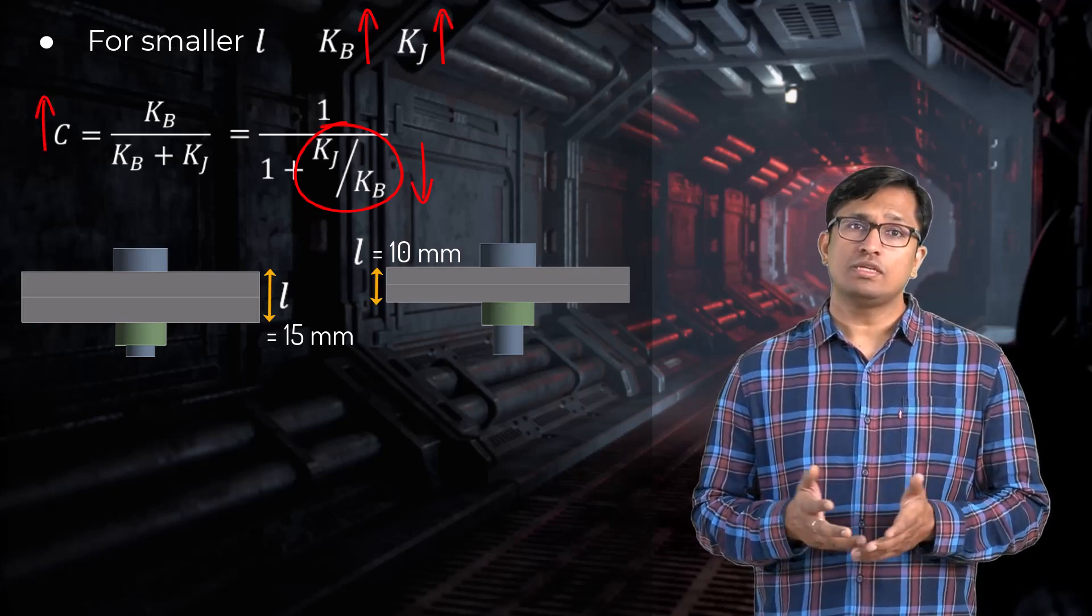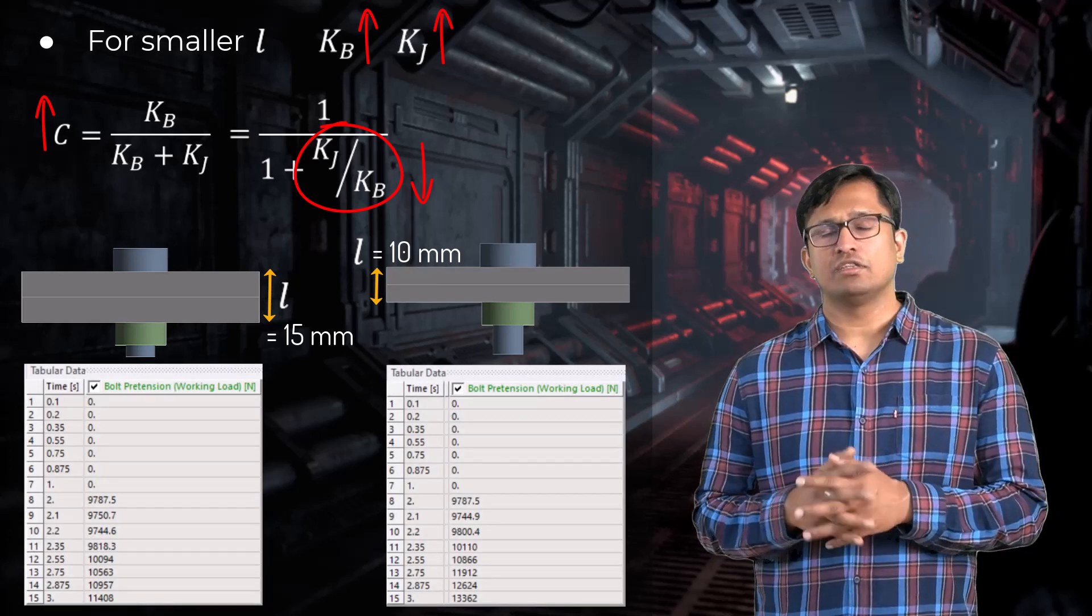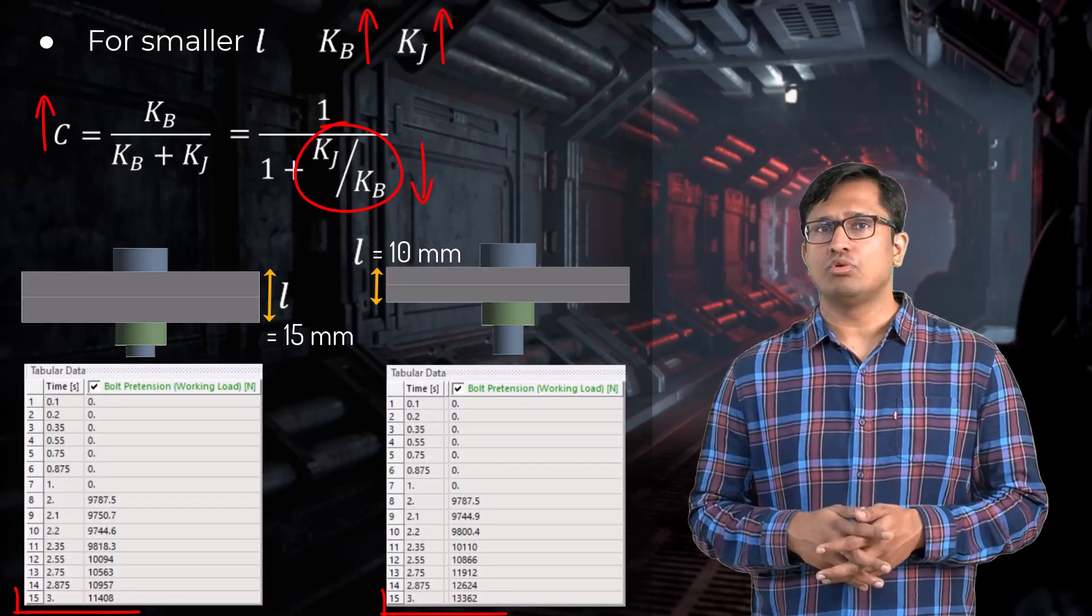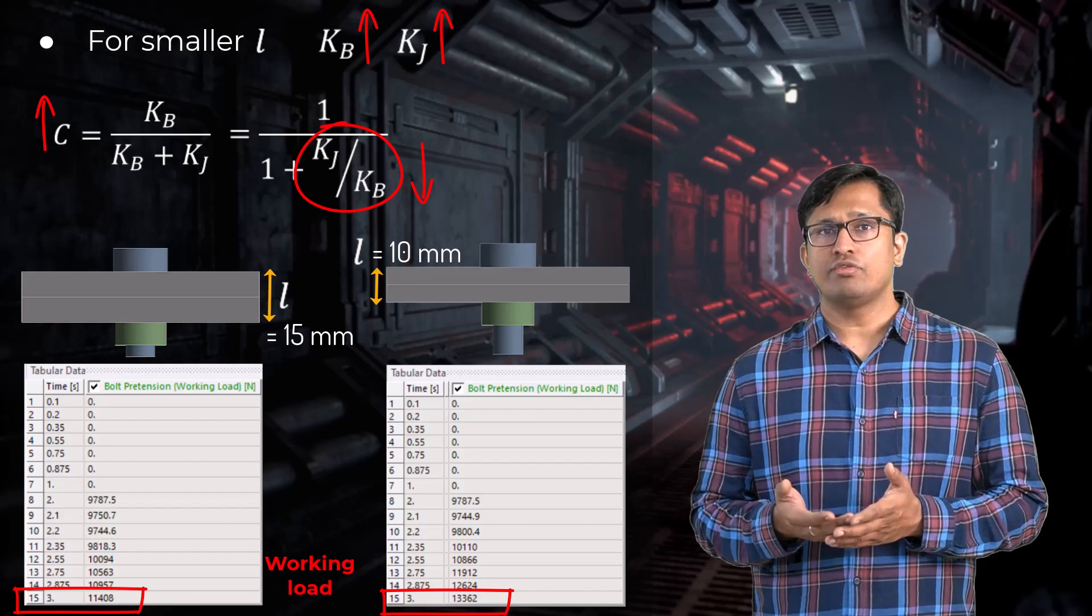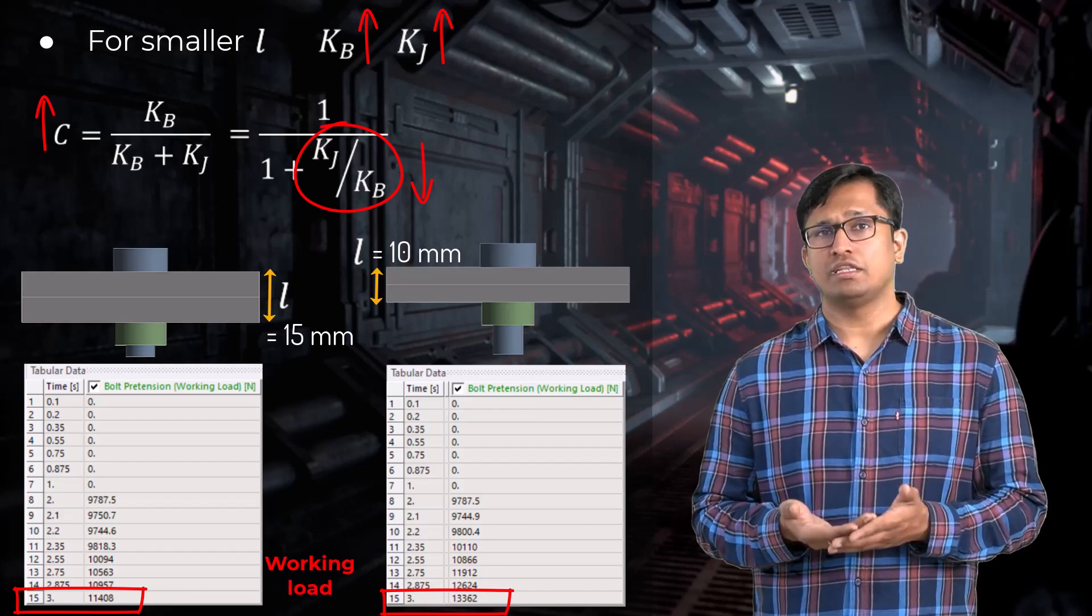Thus, for the same applied bolt preload and same external force, the working load in the bolt increases when the ratio of member stiffness to the bolt stiffness decreases.